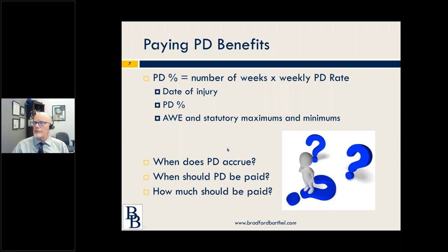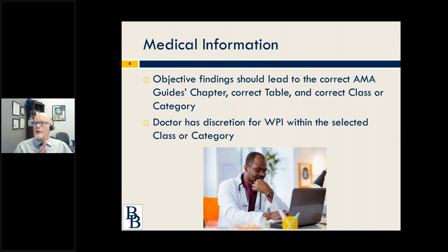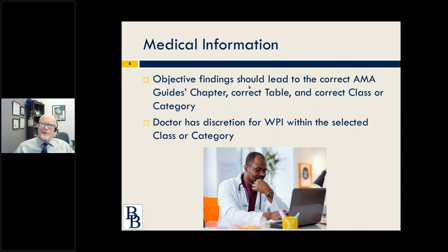We do have a session on estimating PD if you want to look at that in the future. Medical information that you need for evaluating and rating permanent disability: the objective findings the doctor documents on exam should lead the doctor to the correct AMA guides chapter. If you're evaluating the spine, you go to chapter 15. The doctor should be able to find the correct table, correct class, and correct category.